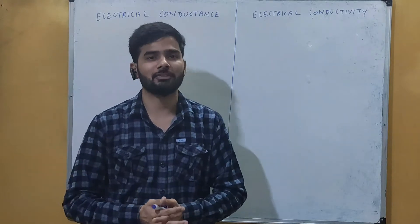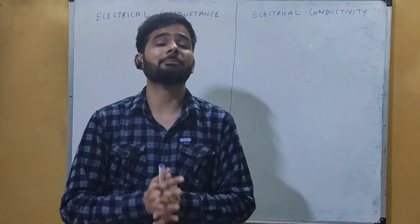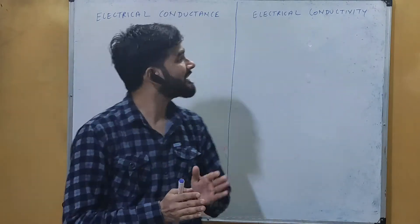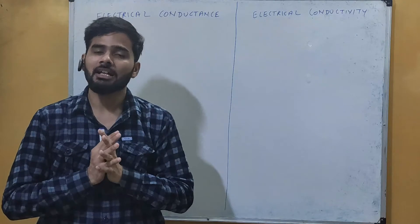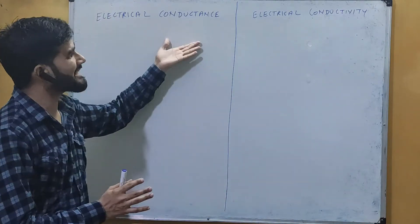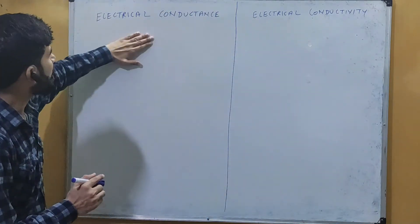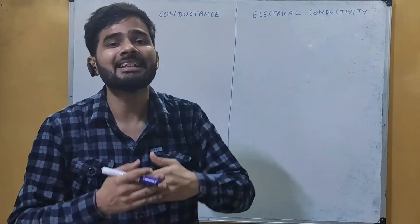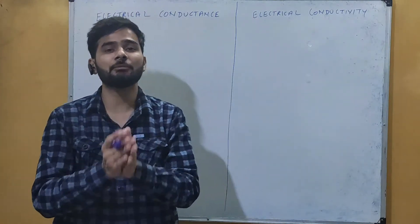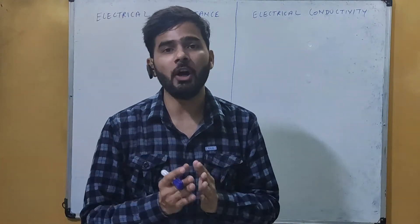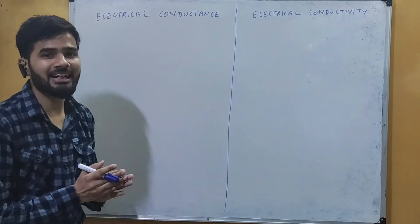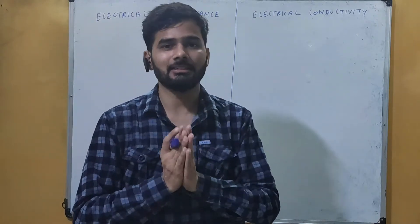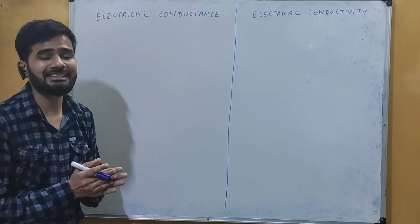Hello students, welcome back to my lectures of class 12th physics. We are studying chapter current electricity. Here we have two new topics: electrical conductance and electrical conductivity. First of all, we will see what electrical conductance is. As we have seen the term resistance — which is simply the obstruction to the flow of current — electrical conductance is exactly opposite to electrical resistance.